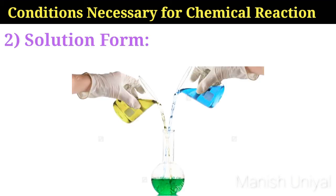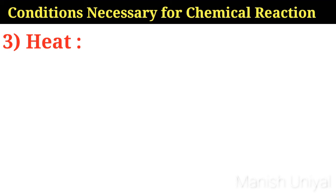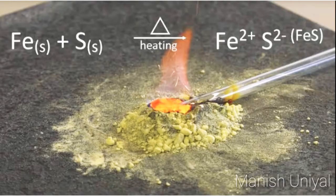Some substances react with each other only when they are mixed in solution form. For example, when sodium chloride solution is added to silver nitrate solution, a white precipitate of silver chloride and a soluble sodium nitrate are formed. The third necessary condition is heat. Some reactants need to be heated to undergo a chemical change. For example, iron and sulfur when heated together react to produce iron sulfide. Without heating, they do not react even if they are in contact with each other.